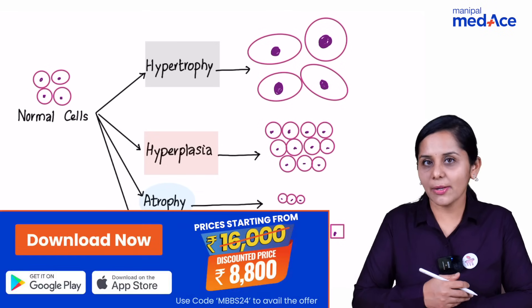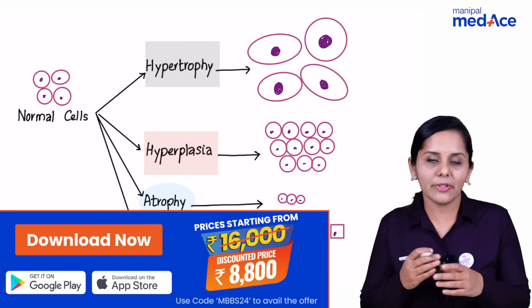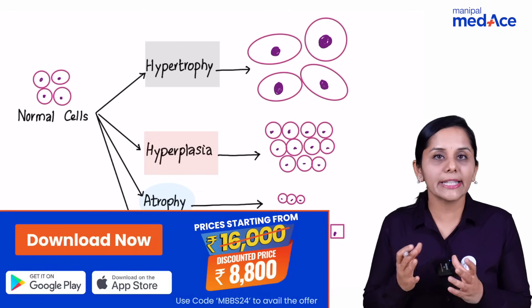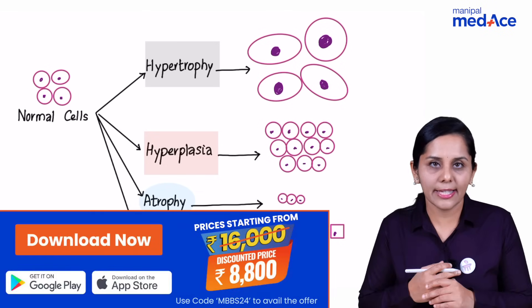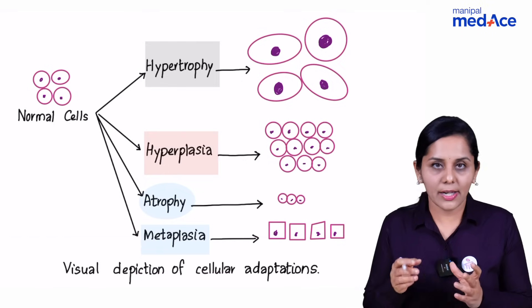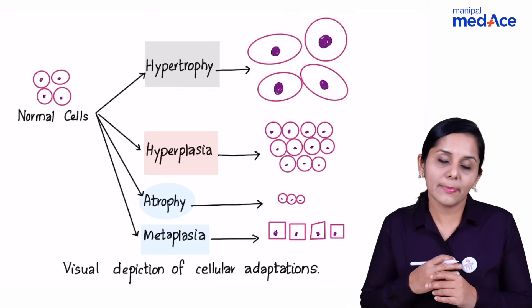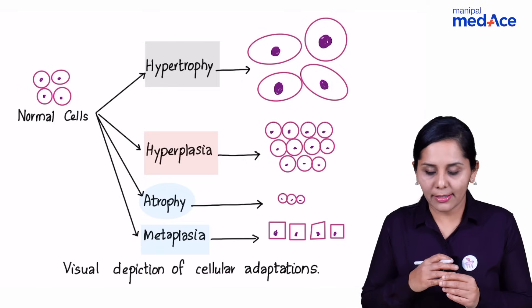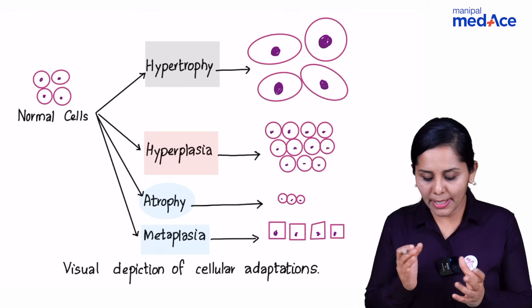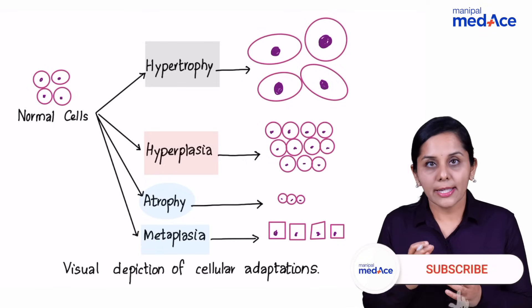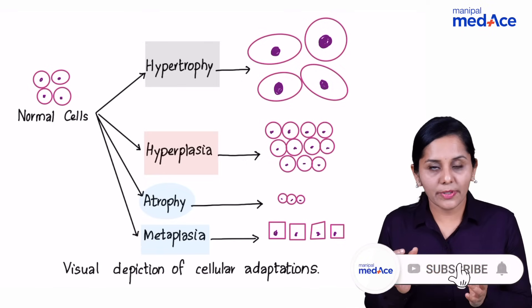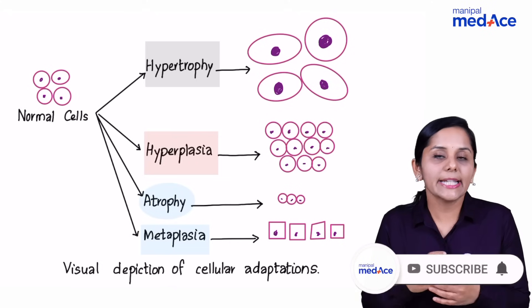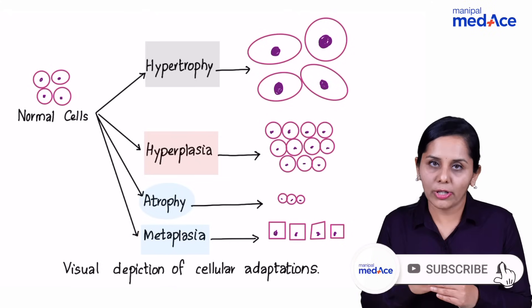When the cell is not able to proliferate, it will increase the size as well as its cytoplasmic contents. That mechanism is hypertrophy, which results in increased size of the organ.